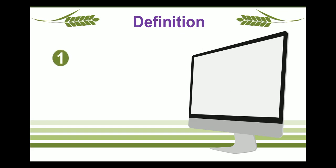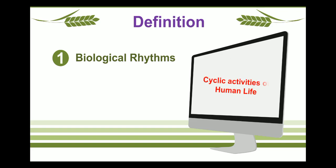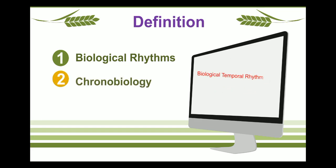Other definitions related to chronopharmacology: Biological Rhythms are the cyclic activities that are characteristics of human life; these behaviors and developments occur as a part of life. Chronobiology is the formal study of biological temporal rhythms such as daily, weekly, seasonal and annual rhythms.